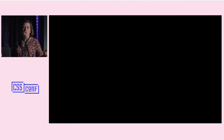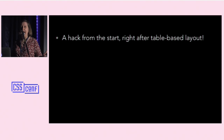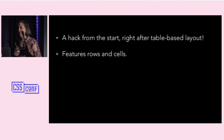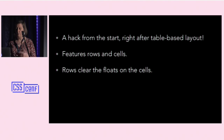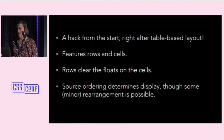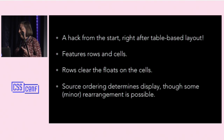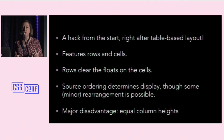Let's review the industry standard about floats. You all know that floats are a hack, yes? Our industry standard is a hack — good times — right after our table-based layout, which was also a hack. This is going to feature rows and cells when we start to put floats into a grid-based system. We put floats on the cells and clear on the rows. The source ordering is pretty much going to determine our display — whatever order we list things in the HTML, that's the way it's going to show up left to right on the page. And the Achilles heel of float-based layout has always been equal column heights.